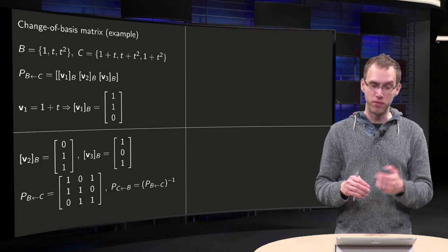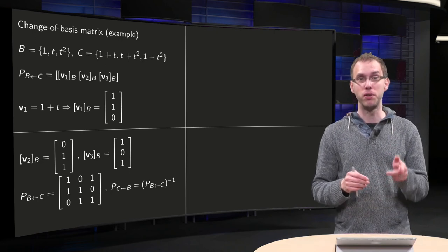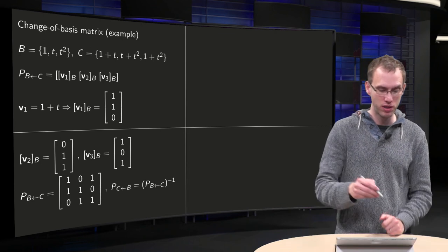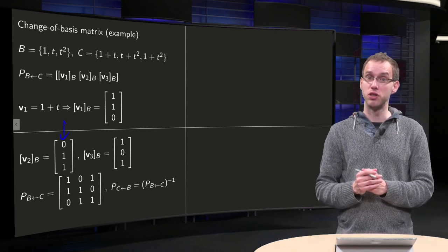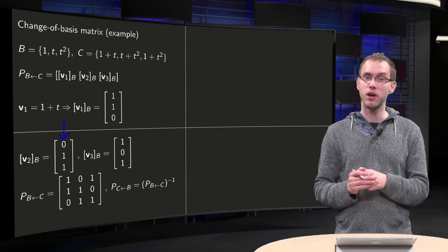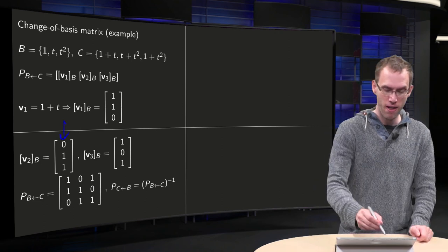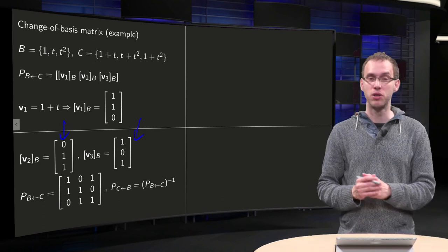And similarly, you can find the other ones. V2 equals t plus t squared, so that is 0 times 1 plus 1 times t plus 1 times t squared, so V2 in B equals 0, 1, 1. And V3 equals 1 plus t squared, so 1 times 1 plus 0 times t plus 1 times t squared, so V3 in B is just 1, 0, 1.